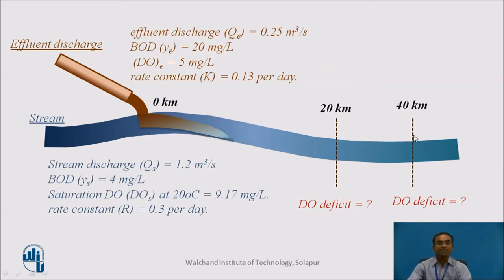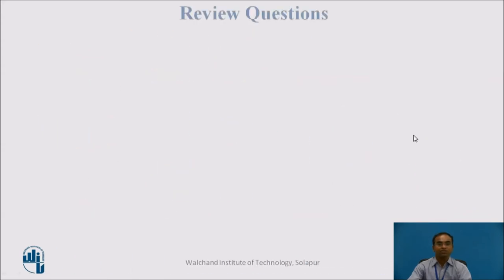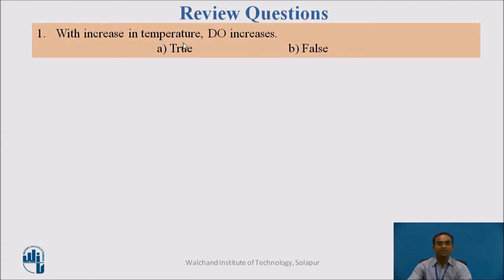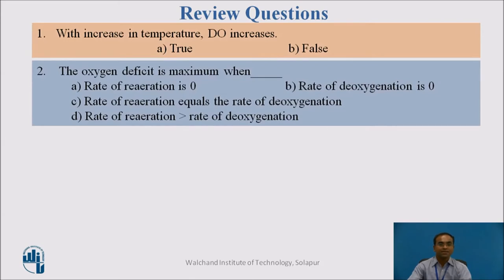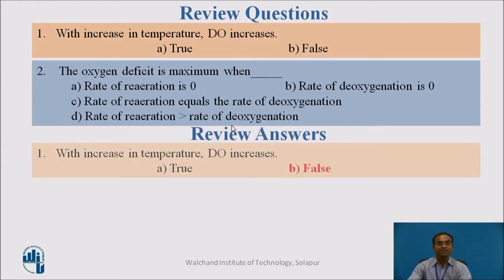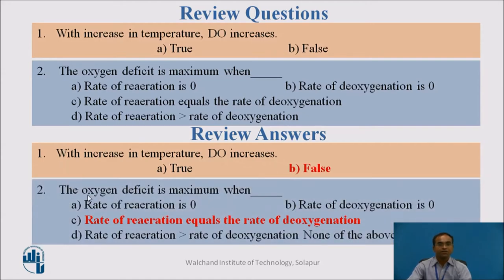After the analysis, we raise a few questions. First: with an increase in temperature, does DO increase? In the question, 20°C is given — what happens if we increase or decrease temperature, and what is the relation between temperature and DO? Second: when will the oxygen deficit be maximum? When we increase temperature, DO will decrease, so the first statement is false. The DO deficit is maximum when R equals K — only at that point will the DO deficit be at its maximum.